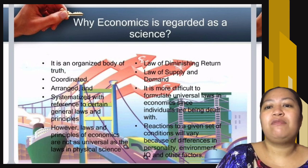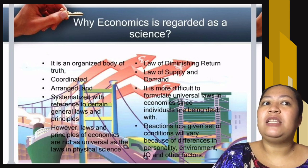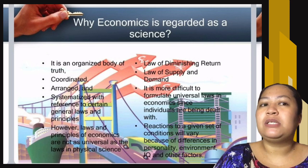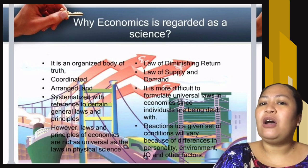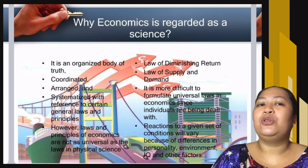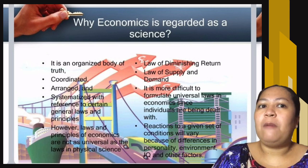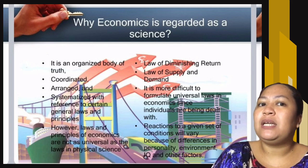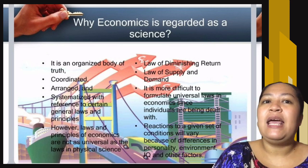Economics is regarded as a science for the following reasons. First, it is an organized body of truth. Second, it is coordinated, arranged, and systematized with reference to certain general laws and principles. However, the laws and principles of economics are not as universal as those in physical science. It has the law of diminishing return and the law of supply and demand. It is also more difficult to formulate universal laws in economics since individuals are dealt with, and reactions to a given set of conditions vary because of differences in personality, environment, IQ, and other factors.